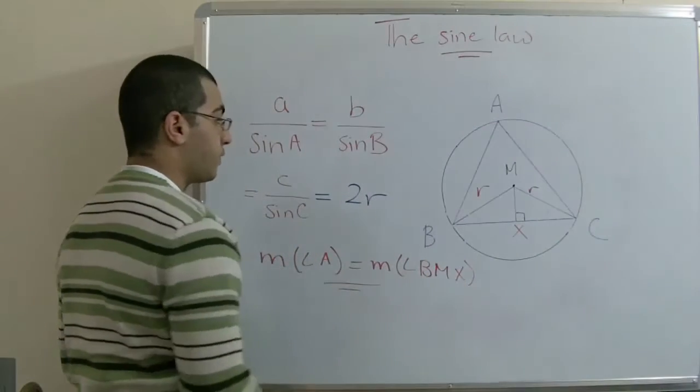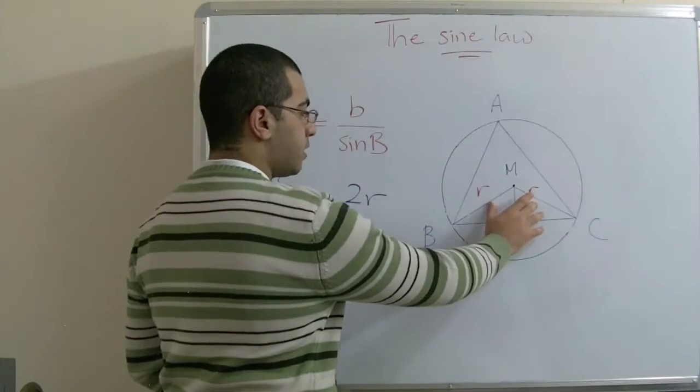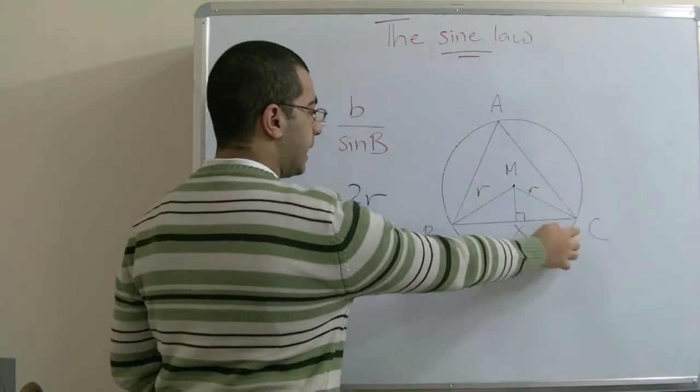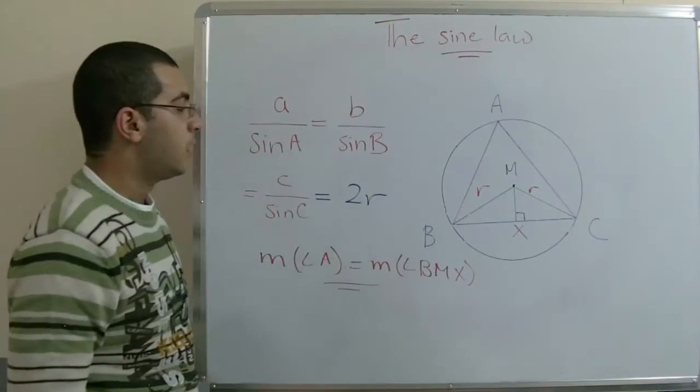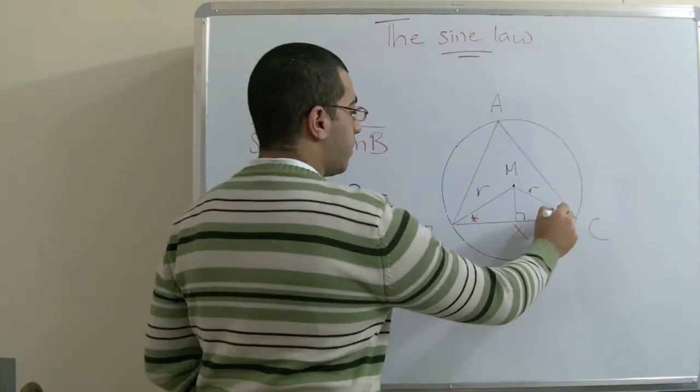This is our first point. Since those two sides are both radii, the triangle BMC is an isosceles triangle, and thus those two angles are equal in measure.